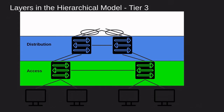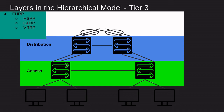At the distribution layer, one of its purposes is that we have the first-hop redundancy protocols. One of those is HSRP. HSRP is a Cisco proprietary protocol, so you cannot run it between a Cisco and an Aruba or Juniper switch — it needs to be Cisco to Cisco.